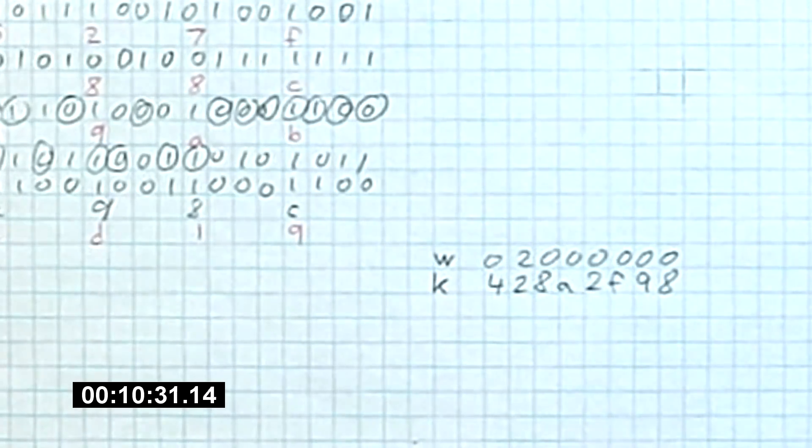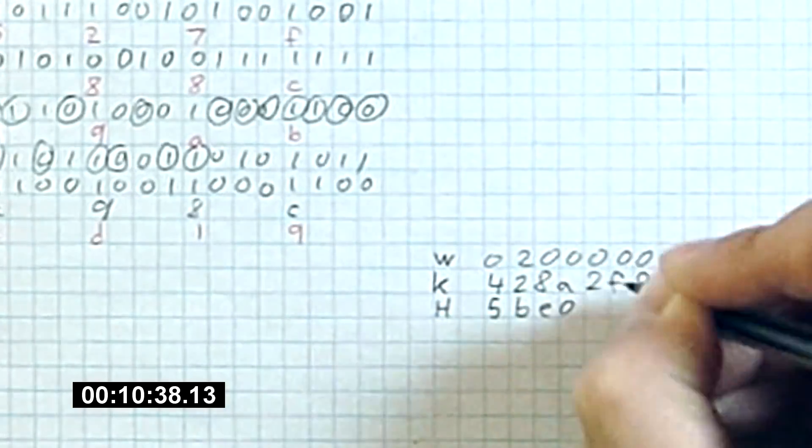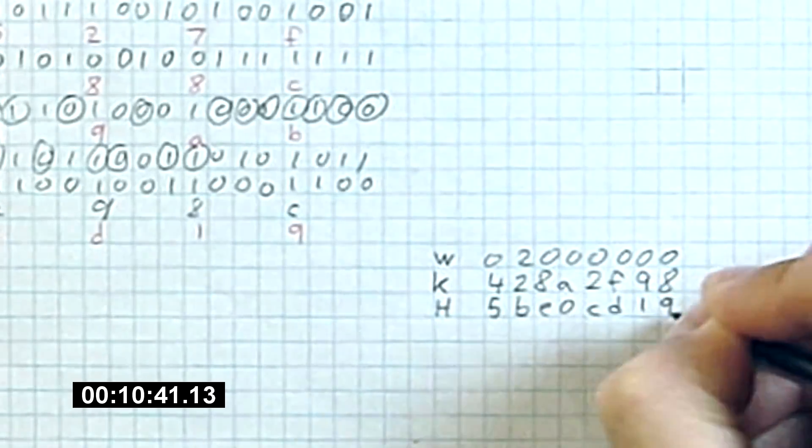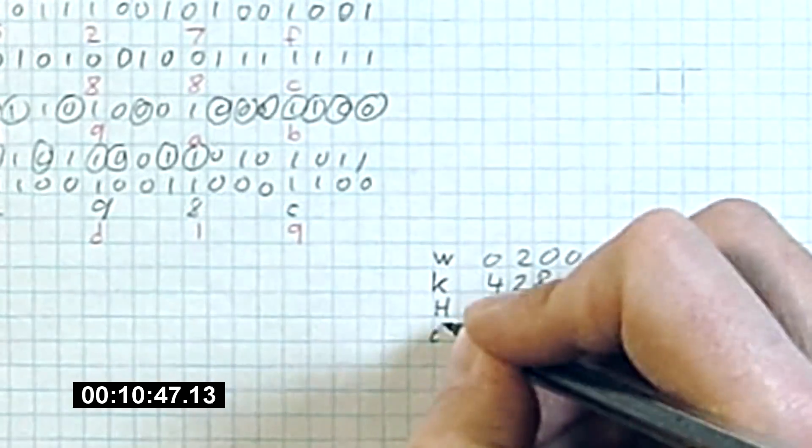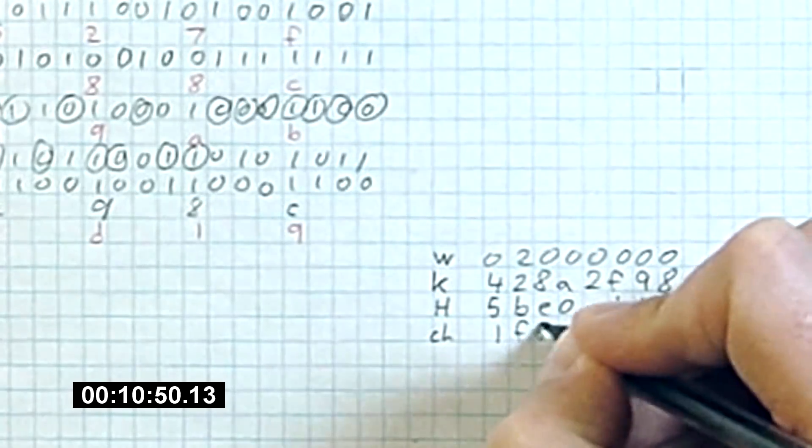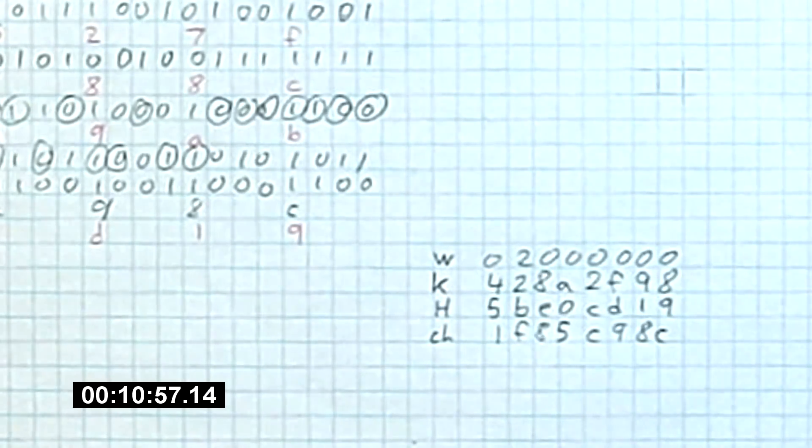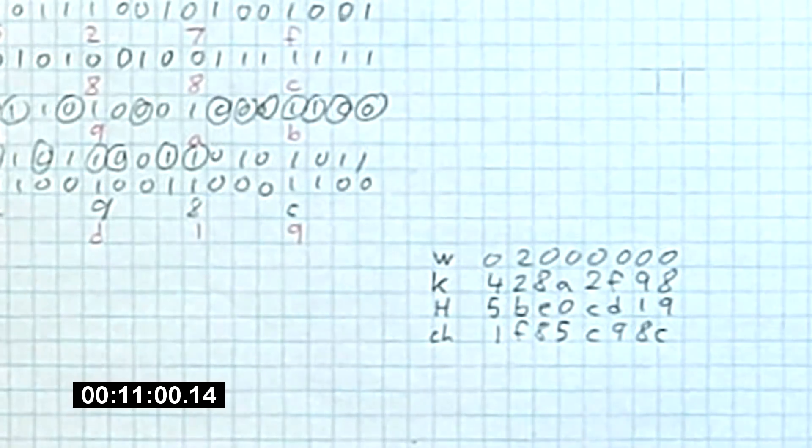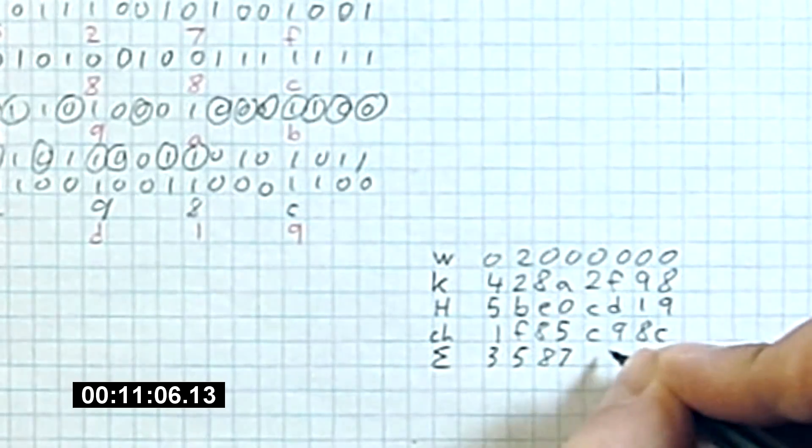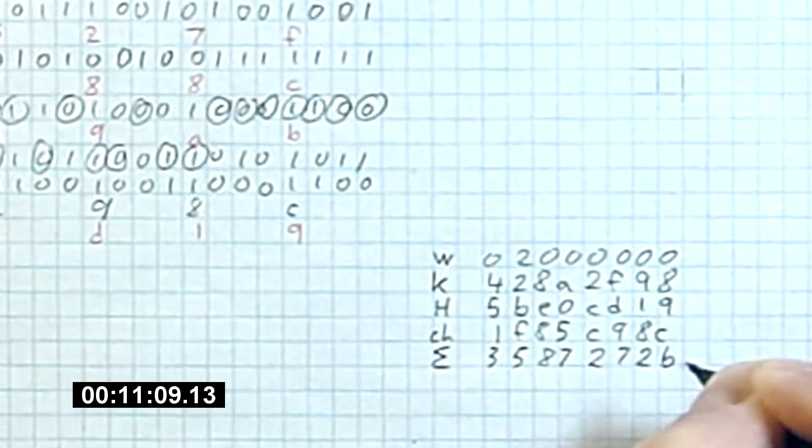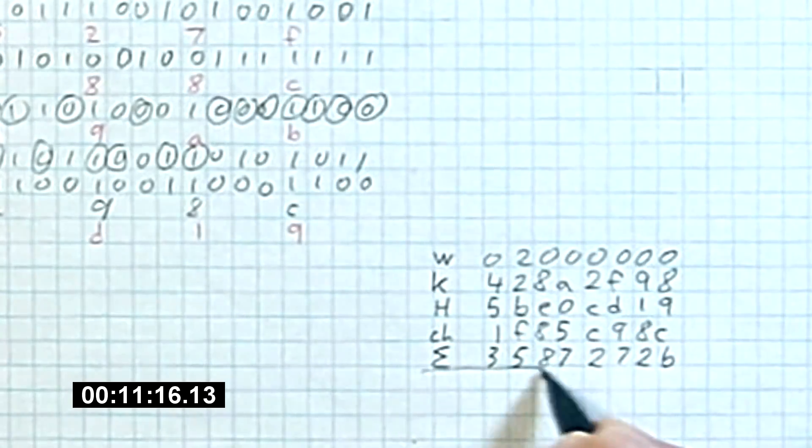And we take our value H, which is just the same value we started with, unchanged. 5, B, E, 0, C, D, 1, 9. We take our choice value we computed earlier, up here, which was 1, F, 8, 5, C, 9, 8, C. And we take our summation of E, which was 3, 5, 8, 7, 2, 7, 2, B. And now we add these values up in hexadecimal.